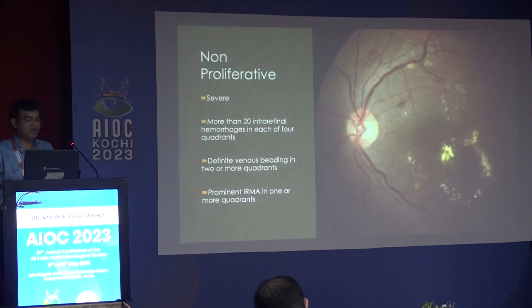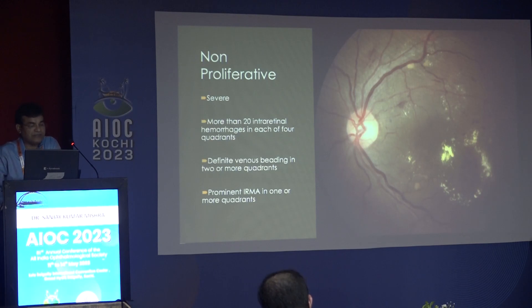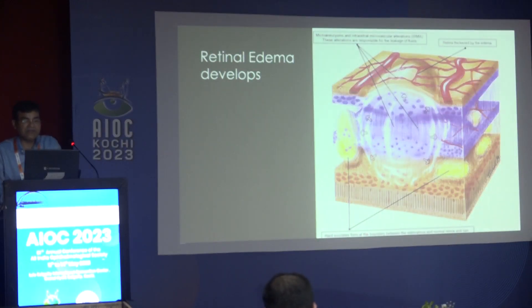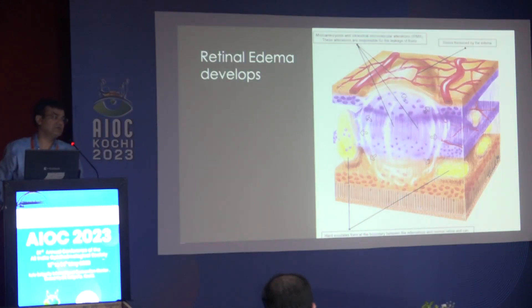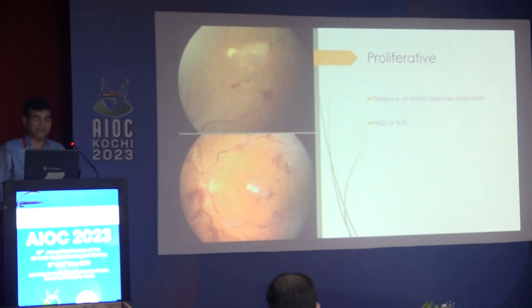The severe form follows the 4-2-1 rule: more than 20 intra-retinal hemorrhages in all four quadrants, definitive venous beading in two or more quadrants, and prominent IRMAs in one or more quadrants. Retinal edema is a very important part of diabetic retinopathy — these microaneurysms and IRMAs start leaking and they thicken the retina causing edema.